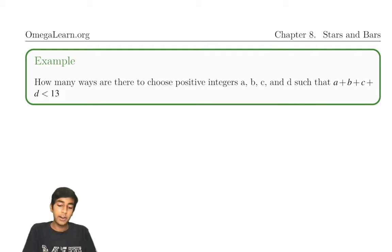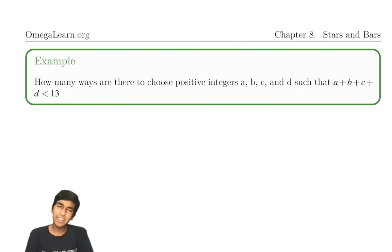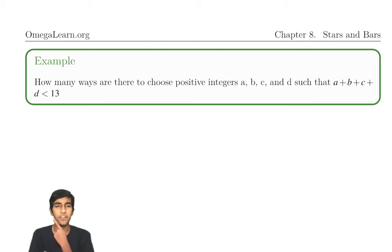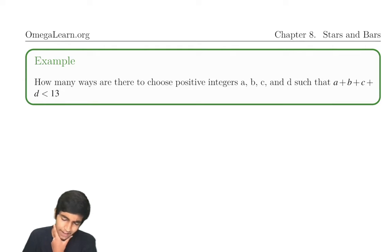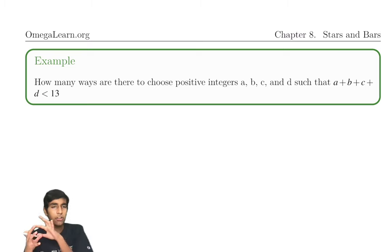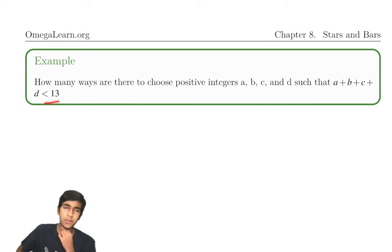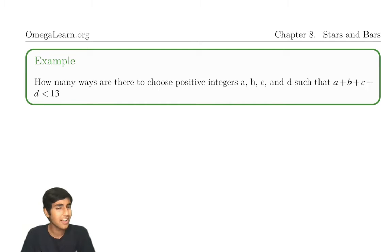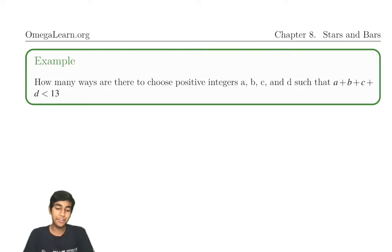How many ways are there to choose positive integers a, b, c, and d such that a plus b plus c plus d is less than 13? You might be wondering: this is an inequality, not a distribution problem. How do we apply stars and bars?